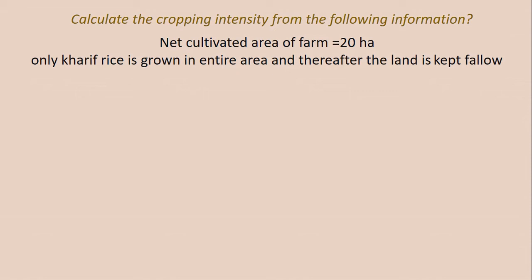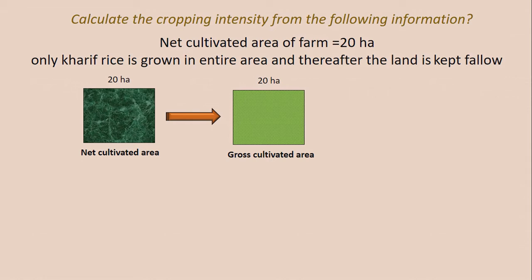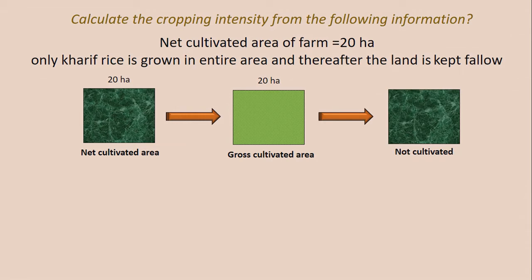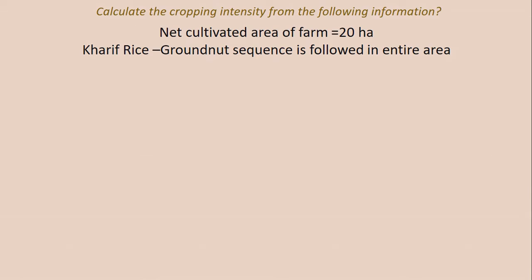Problem 3: Calculate the cropping intensity where the net cultivated area is 20 hectares, kharif rice is grown in the entire area, and thereafter the land is kept fallow. Rice is cultivated in 20 hectares, and in the next season the land is not cultivated. So the gross cultivated area is only 20 hectares. Using the formula: 20 ÷ 20 × 100 = 100%.